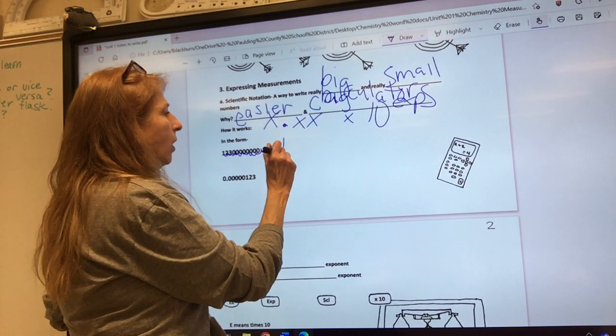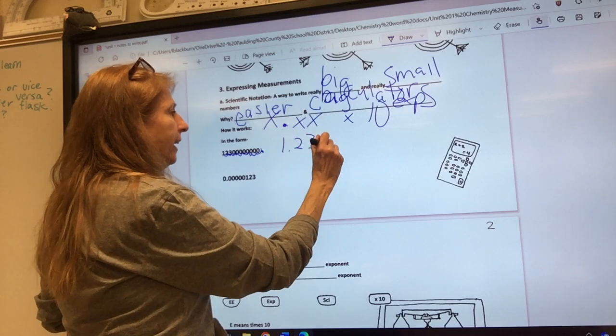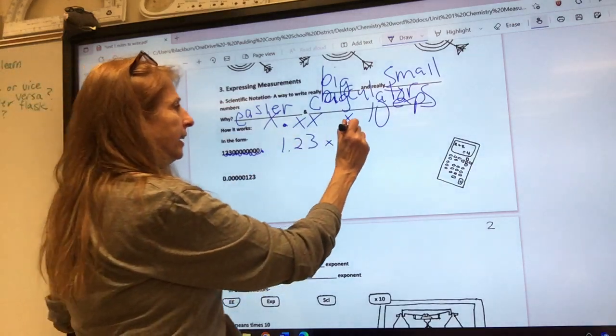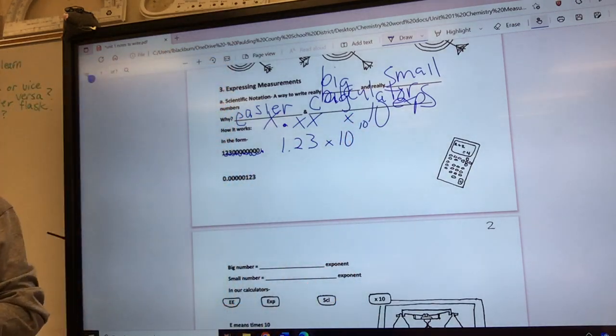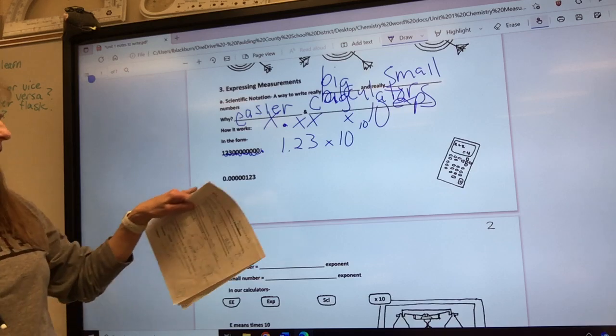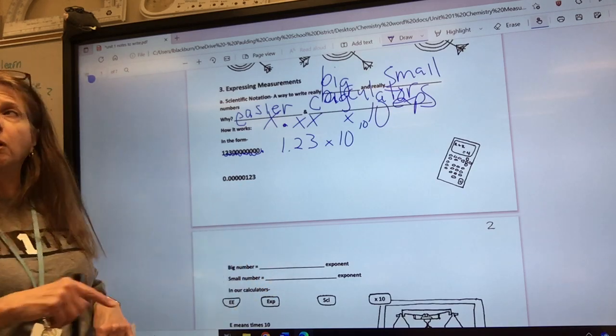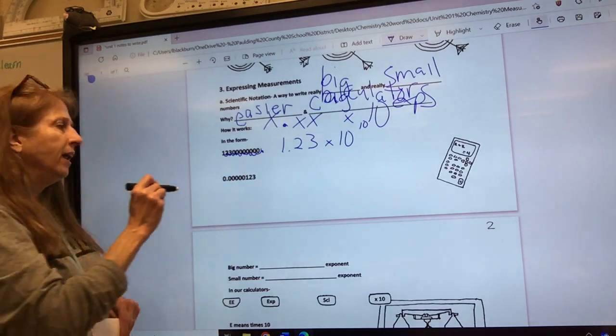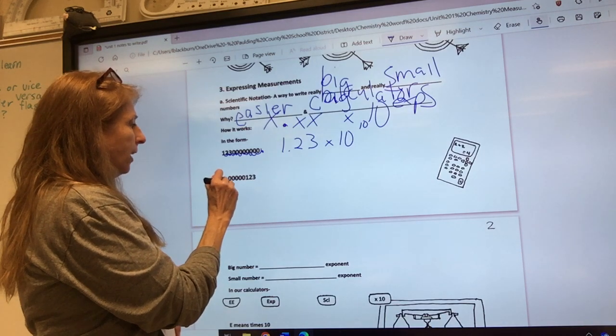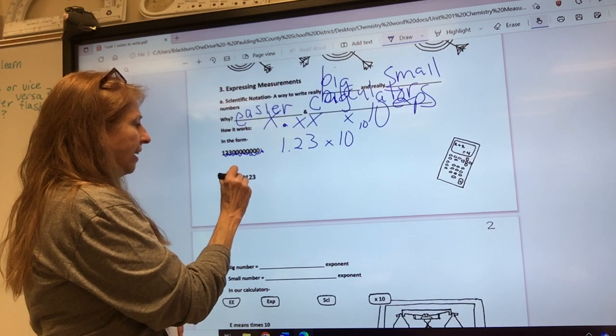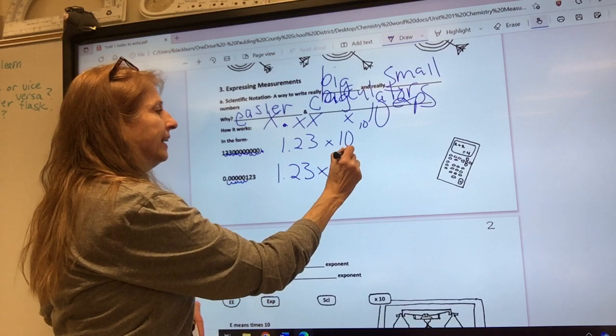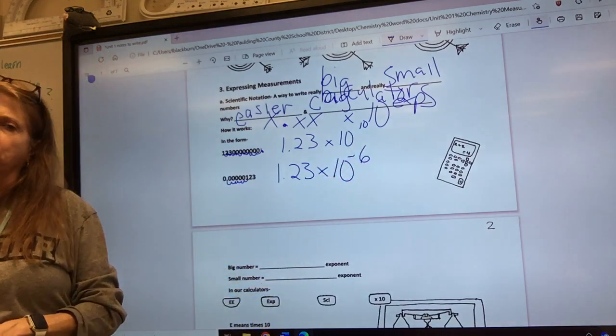Now we're gonna write it 1.23 times 10 to the 10th power. That's not hard is it? Now let's do this one, it's a very small number. We have to make the decimal hop to its place behind the one. Let's count how many hops it is: one, two, three, four, five, six. 1.23 times 10 to the negative six because it's a little number. Big numbers have positive exponents.